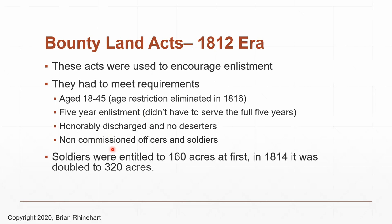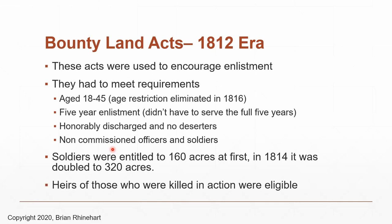Under the 1812-era act, if you were the heir of someone killed in action — the wife, children, parents, or next of kin — you could apply for that bounty land on their behalf. Moving forward to 1850, that's when most bounty land was given out. By that point it changed from an enticement to enlist into simply a reward for service. All officers, including those commissioned officers, were now eligible. War of 1812 bounty land is almost always given in 40-acre increments, so 40, 80, 120, 160, or 320 acres.